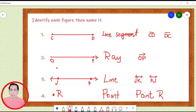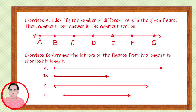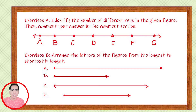Now let's proceed to our exercise. What you are going to do is identify the number of different rays in the given figure, then comment your answer in the comment section below. All you have to do is count how many rays you think are there in the given figure. A ray is only a part of a line and can be extended in one direction and has an endpoint in another direction. When you are done answering, kindly comment your answer in the comment section below.